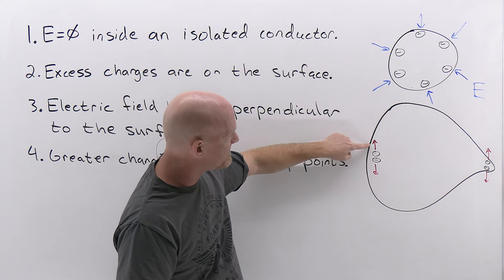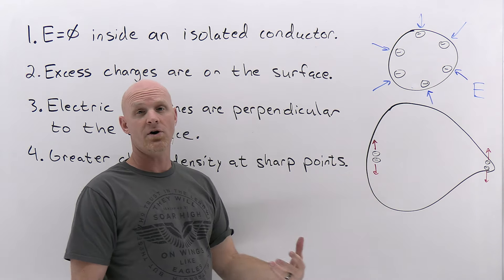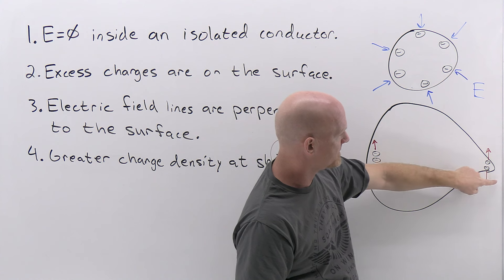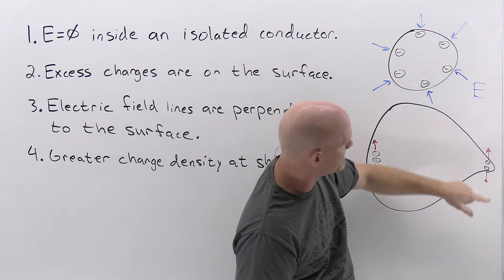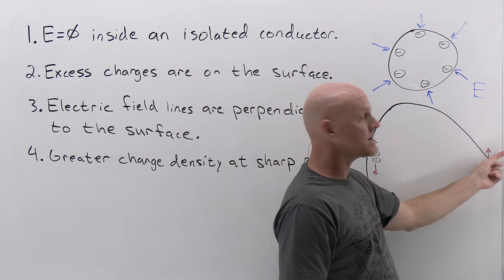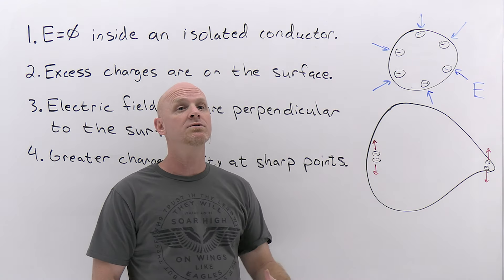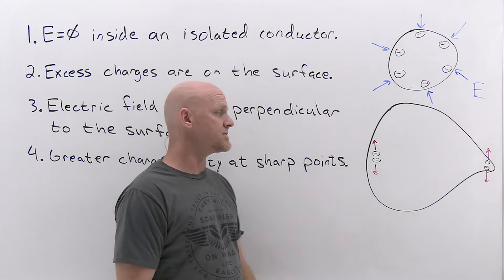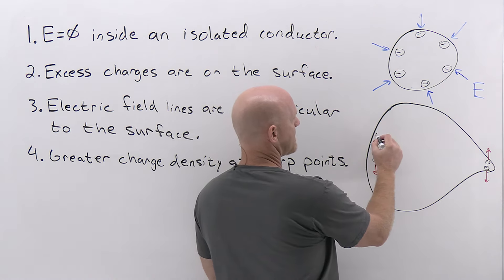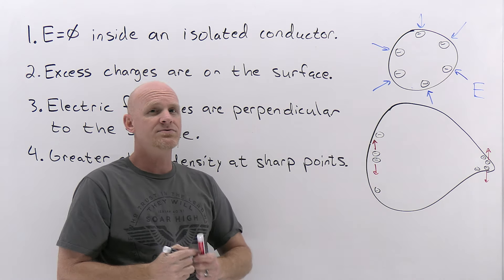For the electrons at the large radius of curvature, most of the repulsive force pushes them along the surface, and they'll move farther and farther apart. Whereas at the small radius of curvature, instead of the force being directed mostly parallel to the surface, there's actually a pretty significant portion already perpendicular to the surface. So which electrons have a greater propensity to move farther apart along the surface? The ones where more of the force is directed along the surface — which is the large-radius end.